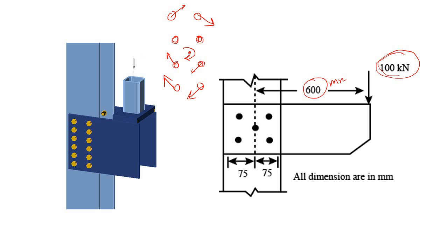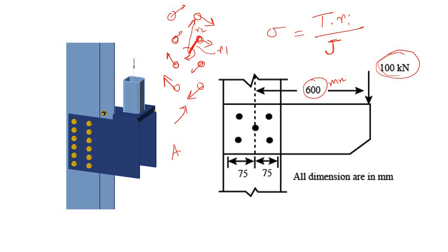The stress due to torsion is calculated as: torsion T multiplied by the radial distance r of the bolt, divided by the polar moment of inertia J. The polar moment of inertia of the bolt group is the summation of the cross-sectional area of each bolt times its radial distance squared. Bolts at r1 and r2 are treated accordingly, and the shear stress is equal for all bolts.